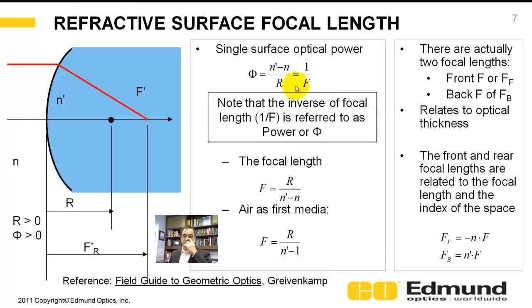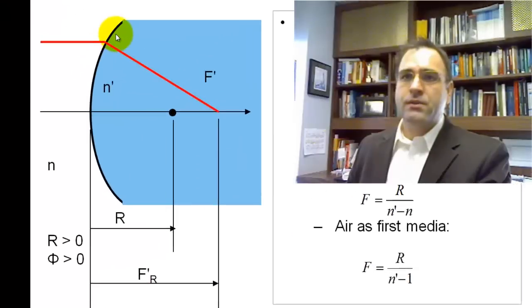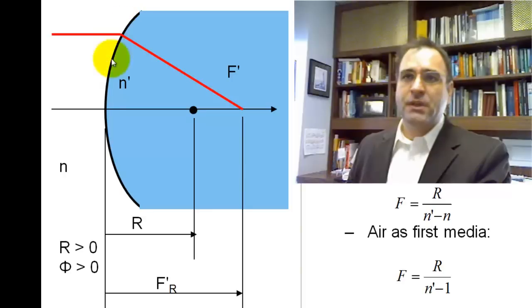So let's talk about imaging through a single optical surface. And so what we've got here is a single piece of glass with a single spherical surface. This radius of curvature is positive, if you follow the sign conventions, because the center of curvature is to the right of the surface. So what is the power of an optical surface?